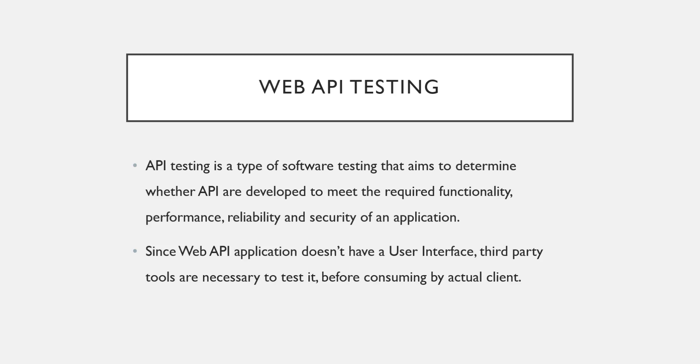First, let's understand the necessity of Web API testing. API testing is a kind of software testing that aims to determine whether APIs meet the required functionality, performance, reliability, and security of an application. Since Web APIs do not have any user interface, it is very hard to test them, which is why many third-party tools are available.